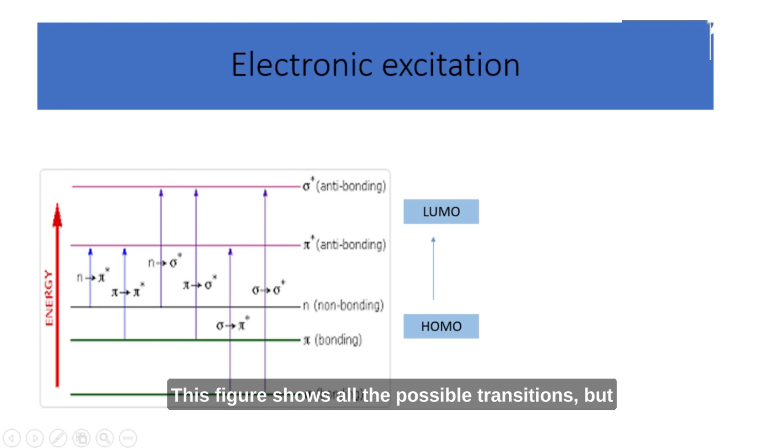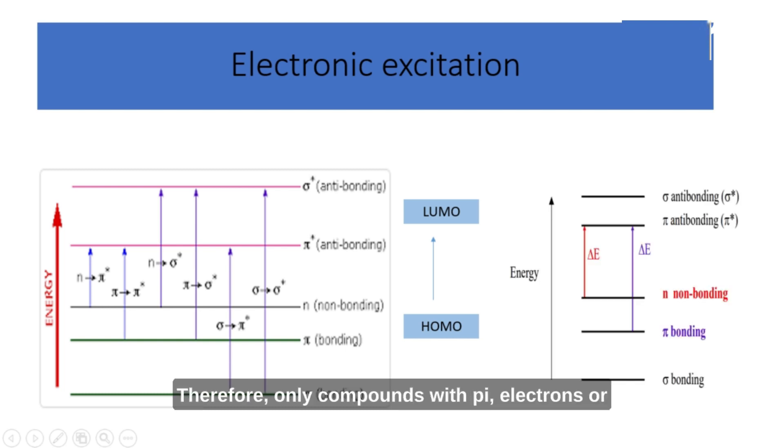This figure shows all the possible transitions. But, in fact, sigma electrons are held very tightly, and hence the energy required is so high. UV visible spectroscopy covers only the smallest energy transitions. Therefore, only compounds with pi electrons or non-bonding electrons usually produce UV visible spectra.